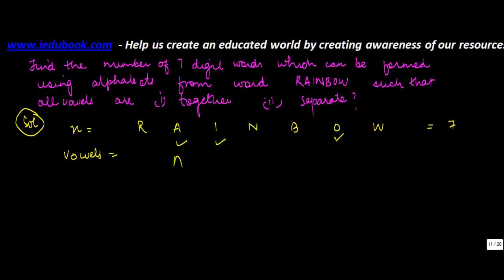Now, how many seven-digit words can be formed using alphabets from the word RAINBOW such that all vowels are together? Let's say you have three places fixed for the vowels and the balance four for the others.